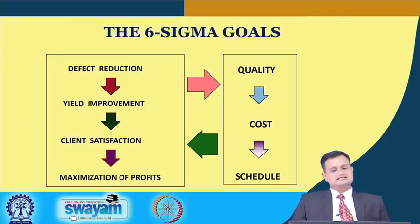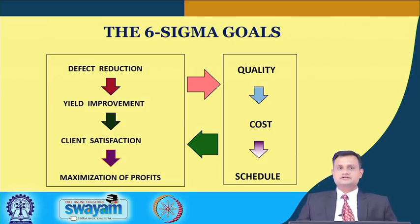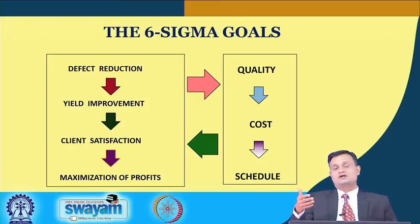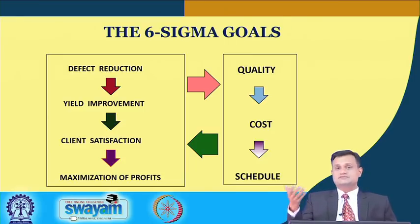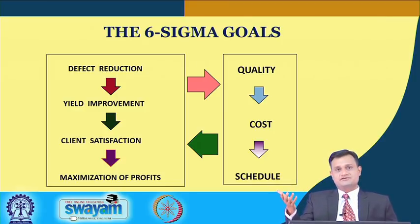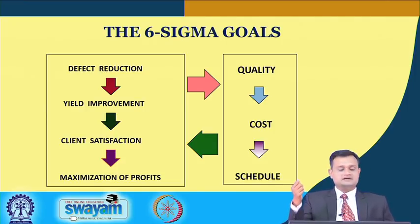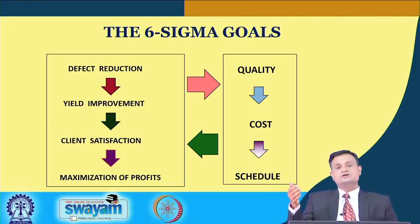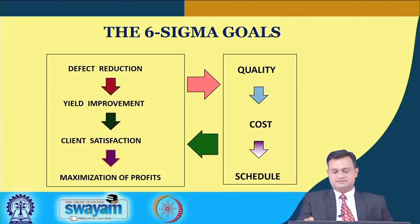There are several Six Sigma goals: defect reduction, yield improvement — the moment you reduce defects, your resources, raw material utilization, and manpower utilization improve and your yield improves. Client satisfaction also improves when you are providing A-grade products or services with a very low defect rate, giving you better control over cost and quality. And as a result, your company can maximize profits and enhance sustainability.